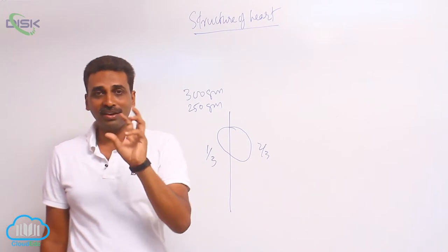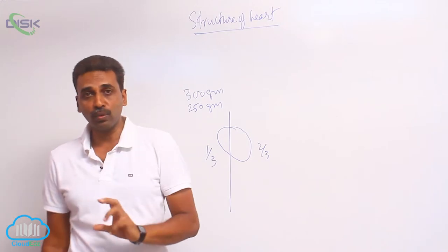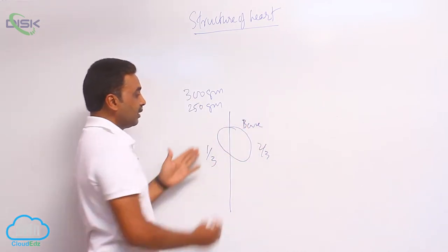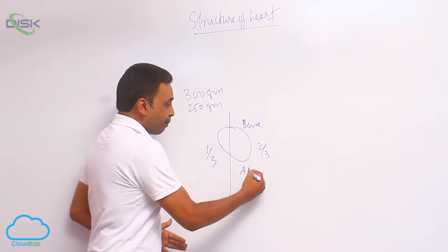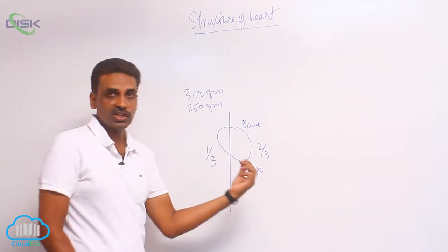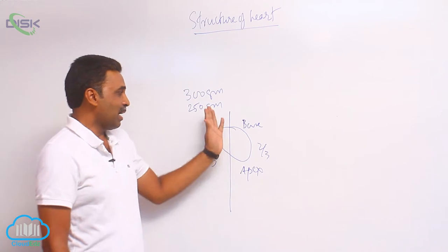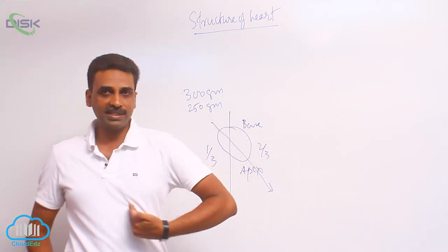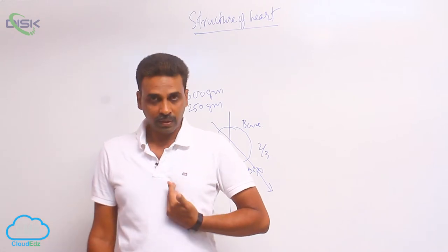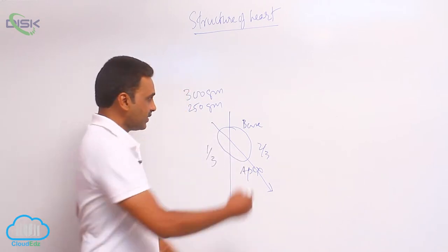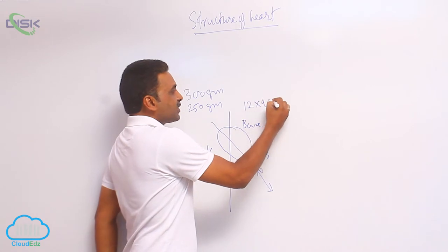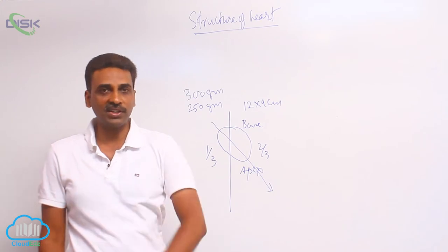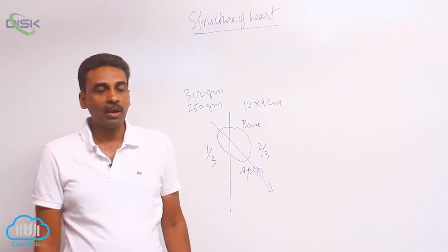The heart is muscular and hollow inside. It has got a broad base and a pointed apex — this region is called the apex. The apex is directed towards the left. The size is 12 by 9 cm: the length is 12 cm and the width is 9 cm.